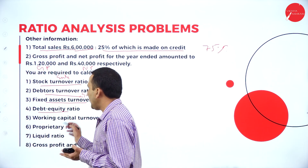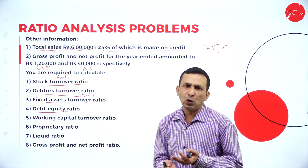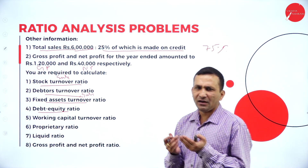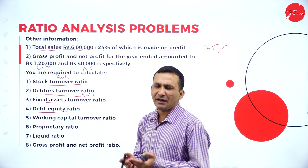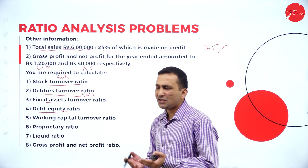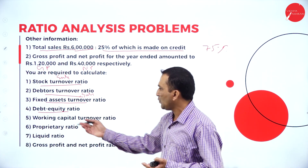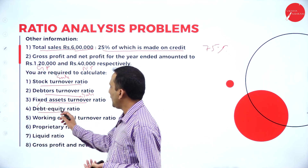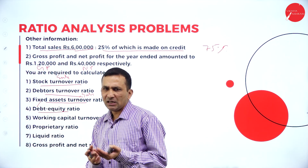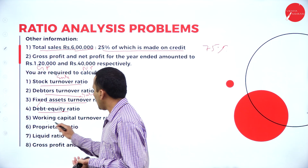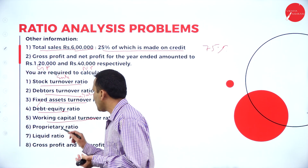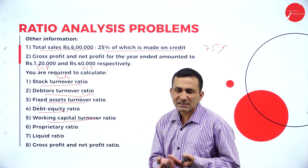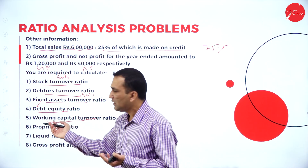Debt is the long-term borrowing, and equity is the real owner of the company. Also to calculate: working capital turnover ratio — we need to find working capital using current assets minus current liability.